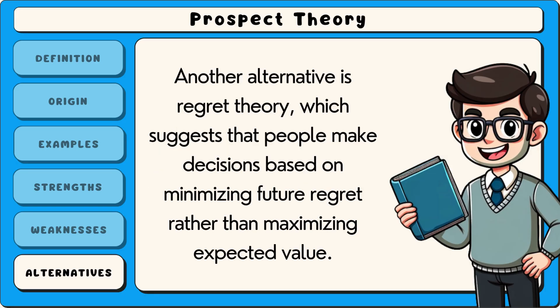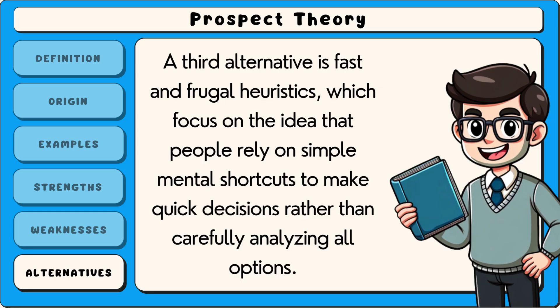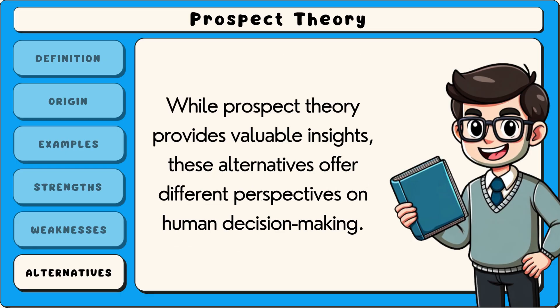Another alternative is regret theory, which suggests that people make decisions based on minimising future regret rather than maximising expected value. A third alternative is fast and frugal heuristics, which focus on the idea that people rely on simple mental shortcuts to make quick decisions rather than carefully analysing all options. While prospect theory provides valuable insights, these alternatives offer different perspectives on human decision-making.